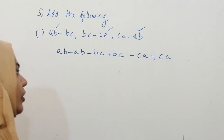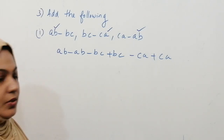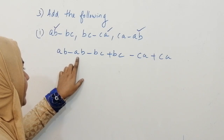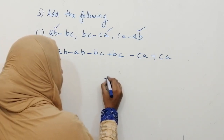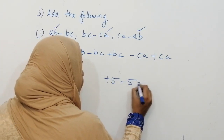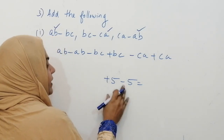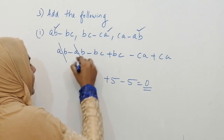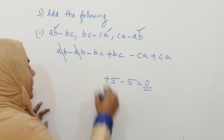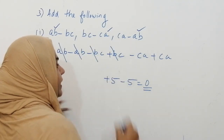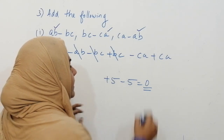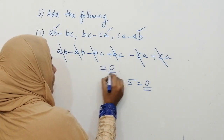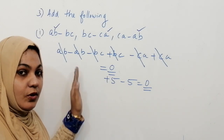Now we combine all the like terms. We can see that ab minus ab is 0, because a number and its negative cancel out. Similarly, minus bc and plus bc cancel, and minus ca and plus ca cancel. So the answer is 0.